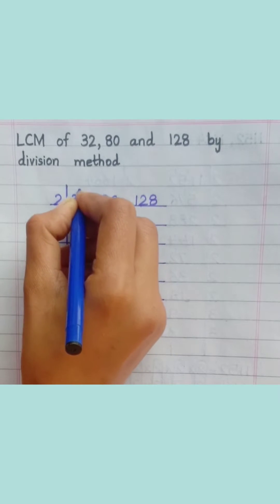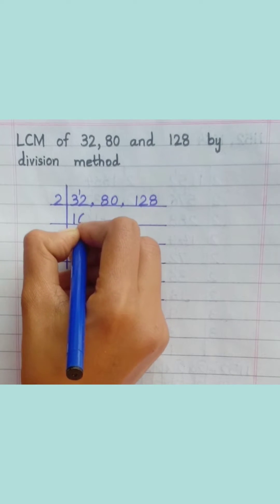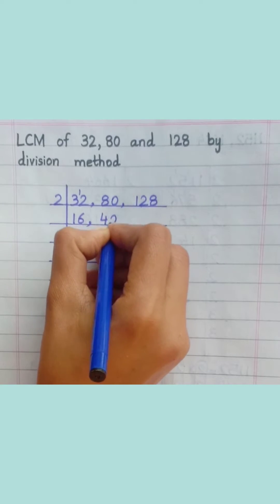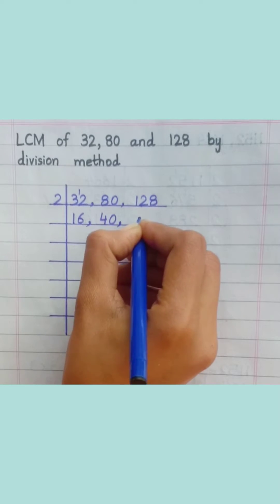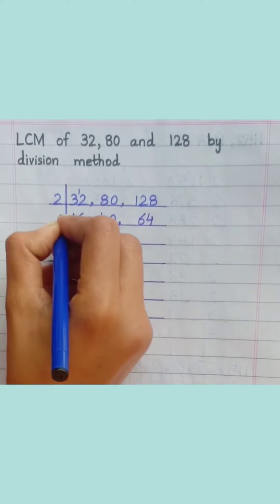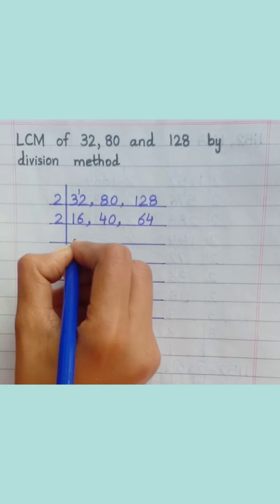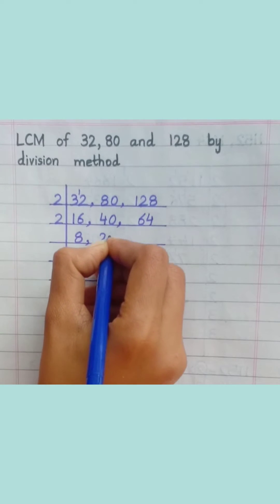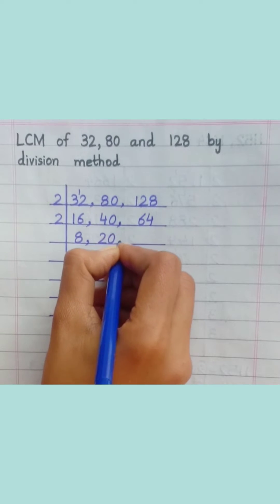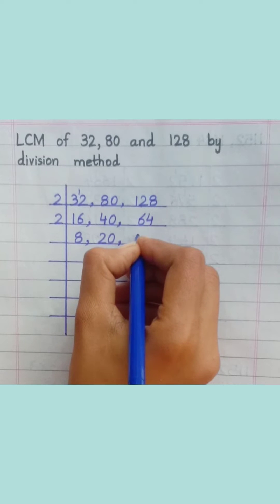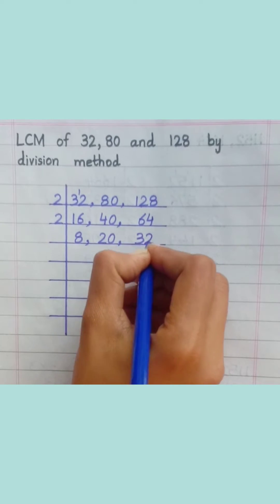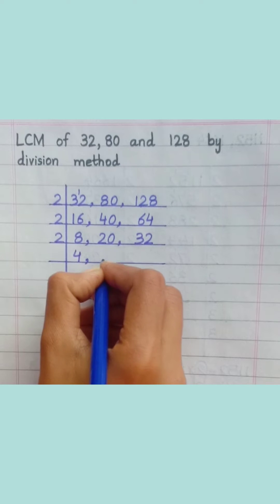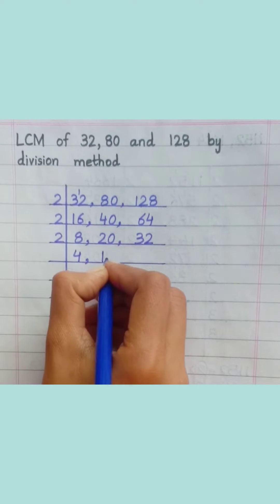2 ones are 2, 2 sixes are 12, 2 fours are 8, 2 zeros are 0, 2 sixes are 12, 2 fours are 8, 2 eights are 16, 2 twos are 4, 2 zeros are 0, 2 threes are 6, 2 twos are 4, 2 fours are 8, 2 tens are 20.